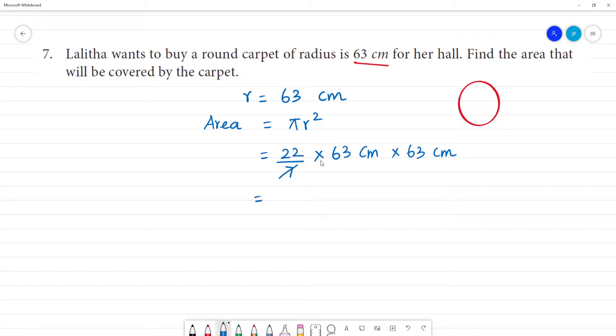If we cancel, 1 times 7 is 7, 9 times 7 is 63. So we can multiply. 22 into 9, 9 times 2 is 18 remainder 1, 9 times 2 is 18, 18 plus 1 is 19. 198 multiplied by 63 cm into cm is cm square.